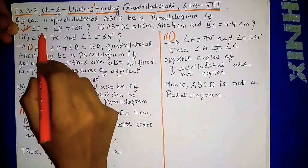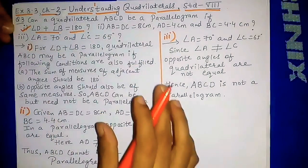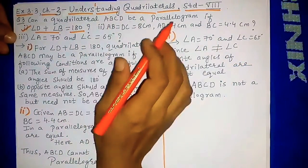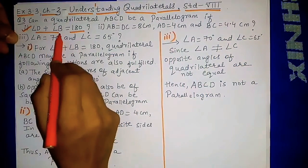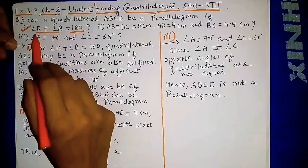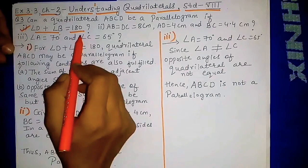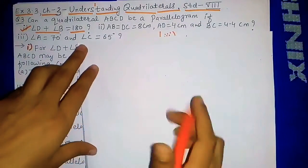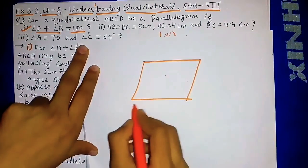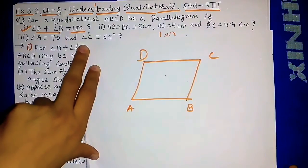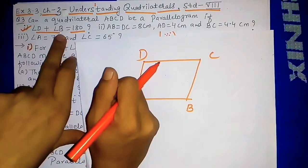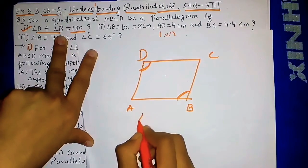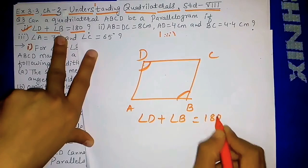For the first condition, angle D + angle B = 180°. If any four-sided figure ABCD is given, can it be a parallelogram if angle D + angle B equals 180°? We will draw a rough figure — a quadrilateral named ABCD — where angle D plus angle B totals 180°.